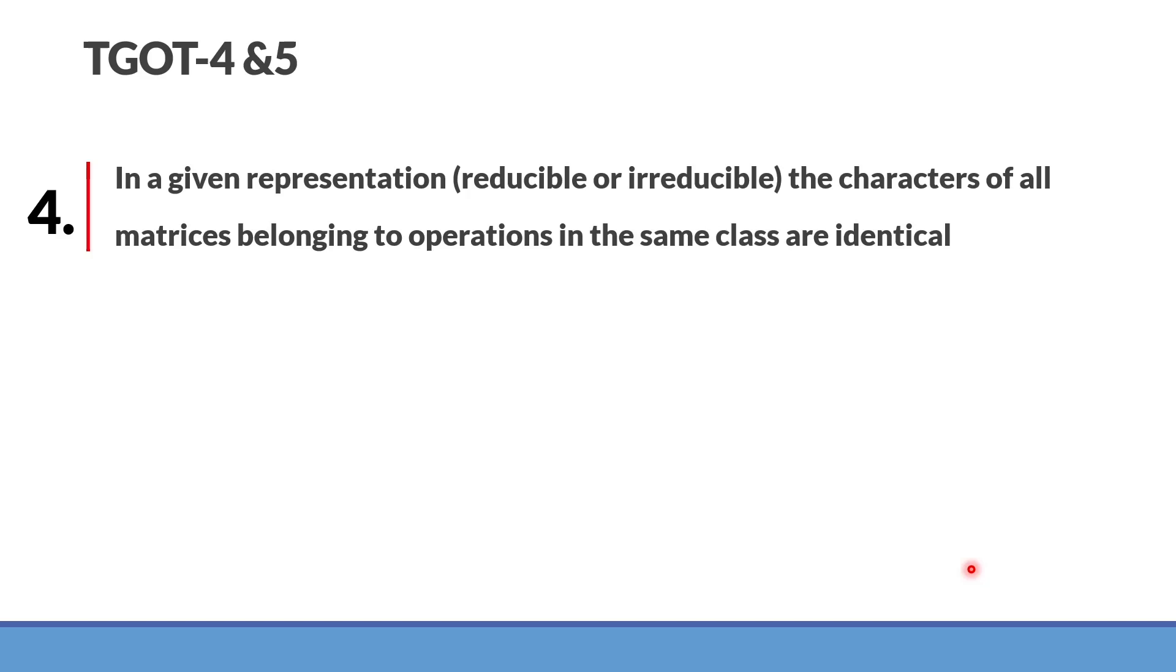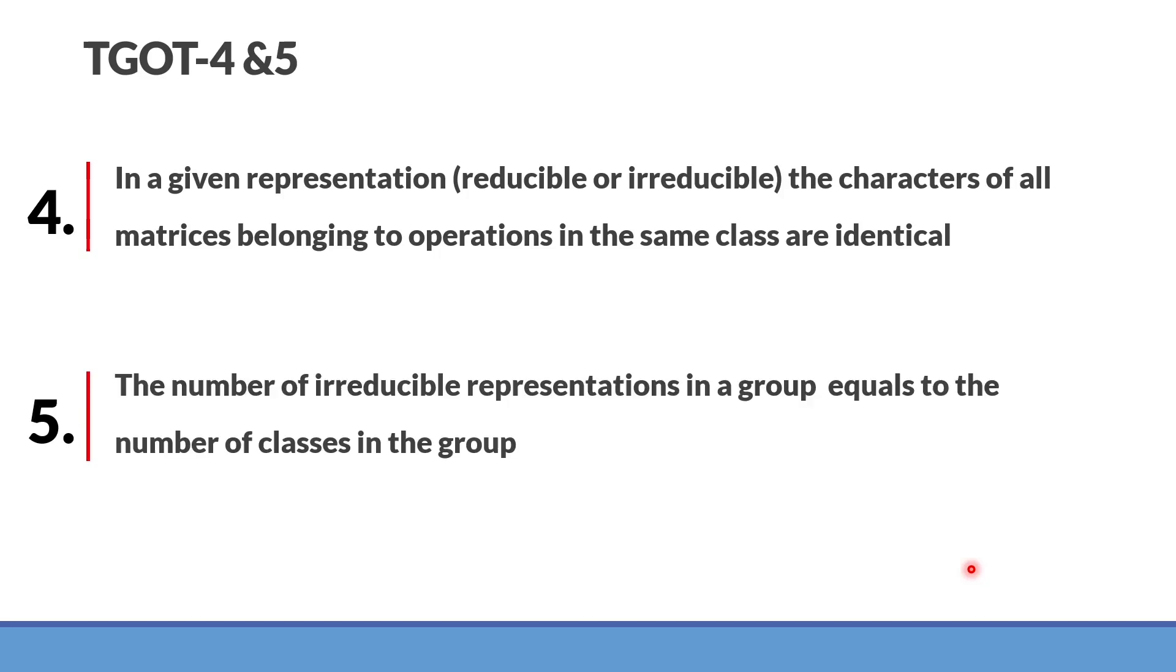Characters of the same class are same, that is rule number four. Rule number five states that the number of irreducible representations in a group equals to the number of classes in that group.